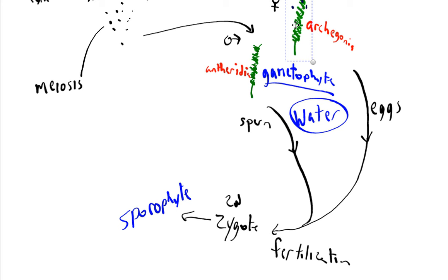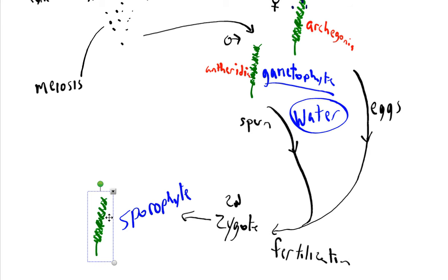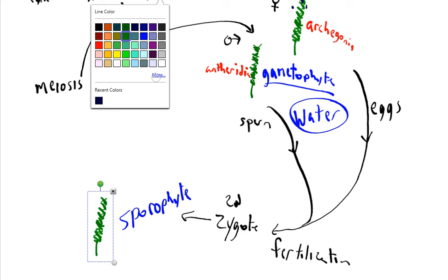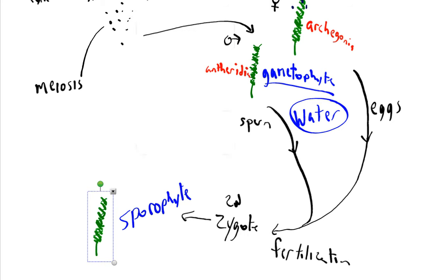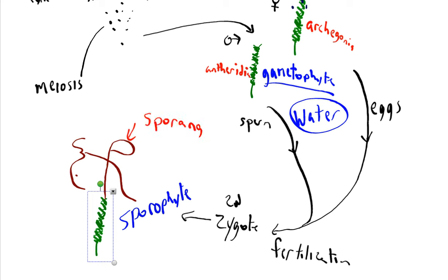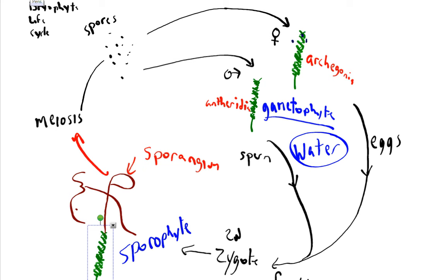The zygote is now the sporophyte generation. In mosses, the sporophyte generation looks different than in any other type of plant because the gametophyte is the dominant version. The sporophyte actually grows up out of the moss. The little structure at the top where spores are made is called the sporangium. Inside the sporangium, meiosis is happening, producing spores, which can grow into antheridia and archegonia, which combine to form a zygote, and so forth. This is the bryophyte life cycle.